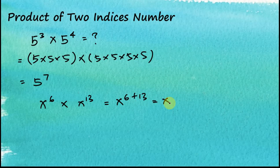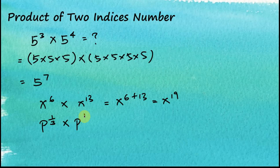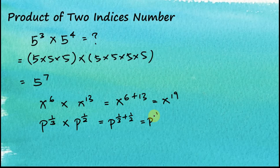x to the power of six times x to the power of 13 equals x to the power of 6 plus 13, which is x to the power of 19. Another example: p to the power of one-third multiplied by p to the power of one-half equals p to the power of one-third plus one-half, which is 2 over 6 plus 3 over 6.